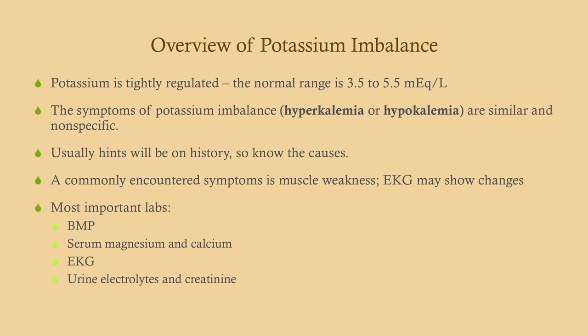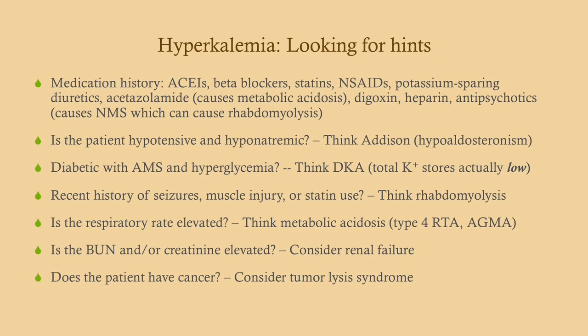The most important labs: a BMP — you won't know if you have hypo- or hyperkalemia without it. You should also get a serum magnesium and calcium. Get an EKG if they have hypo- or hyperkalemia, but it's even more important for hyperkalemia. Also get urine electrolytes and creatinine, because we want to know whether they are inappropriately retaining potassium through their urine.